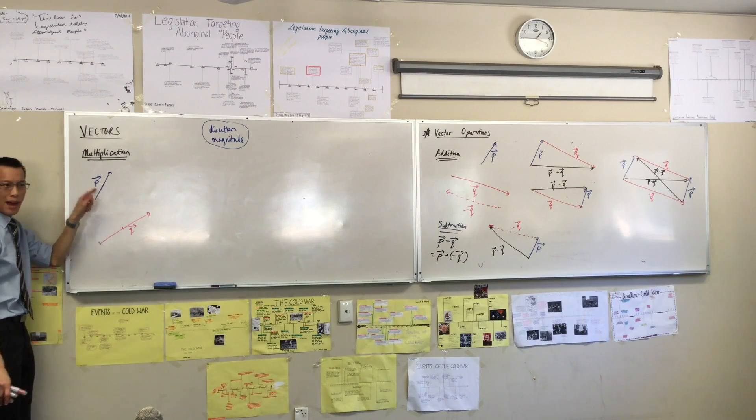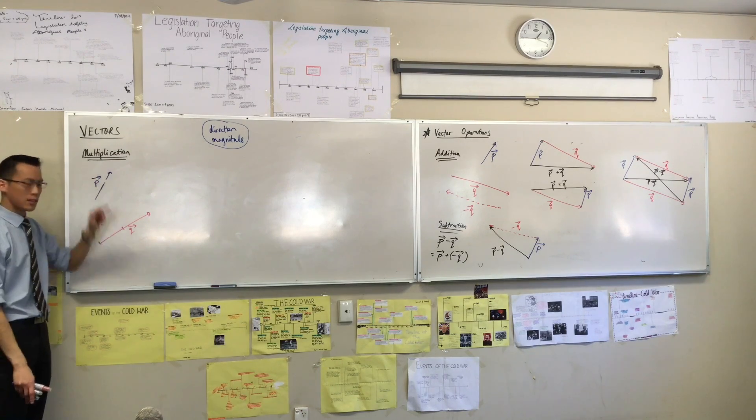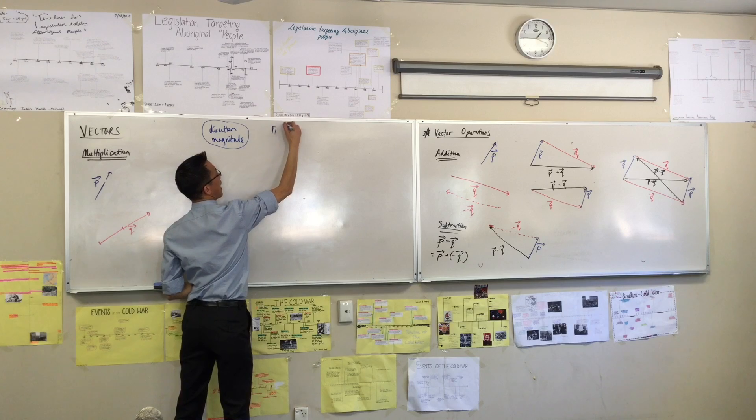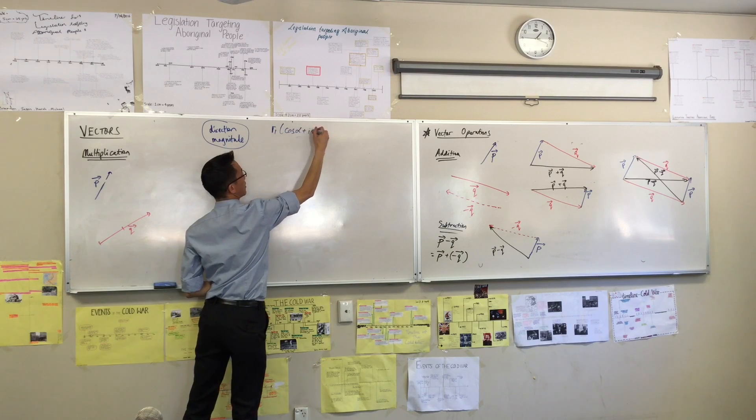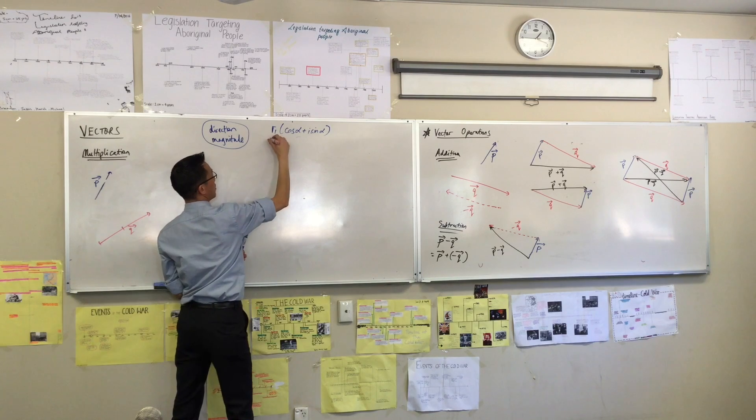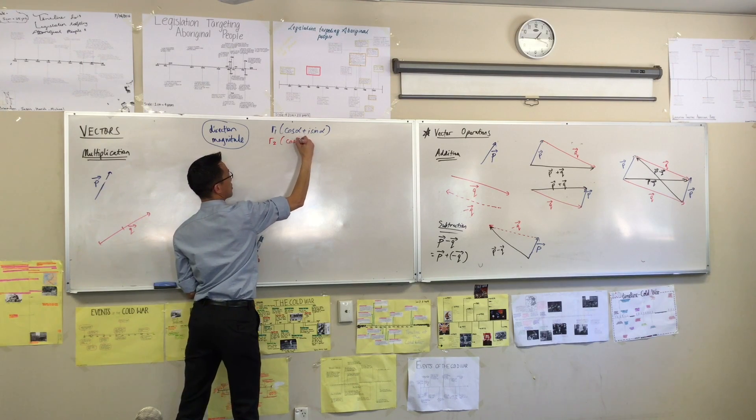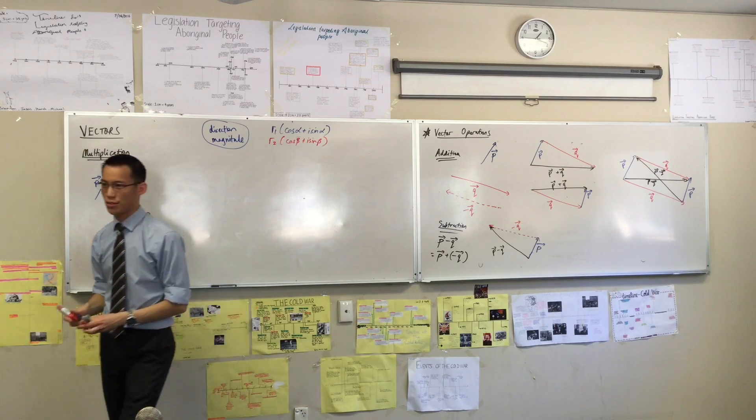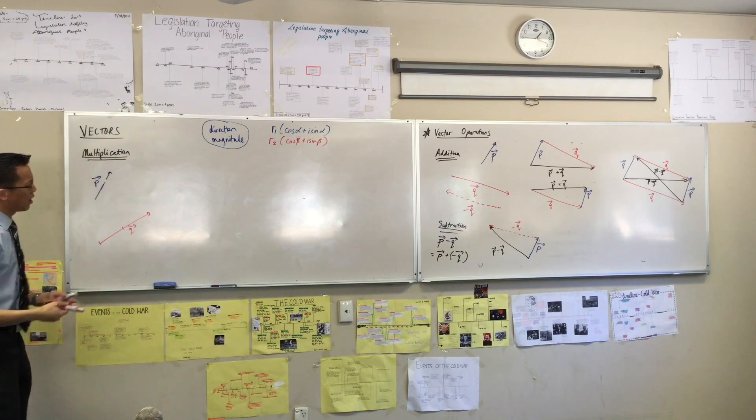So for example, if I wanted to do p times q, think back to when we did this. If I had some complex number like this and some other complex number like this, when we multiply these two together, call them z and w, or p and q.